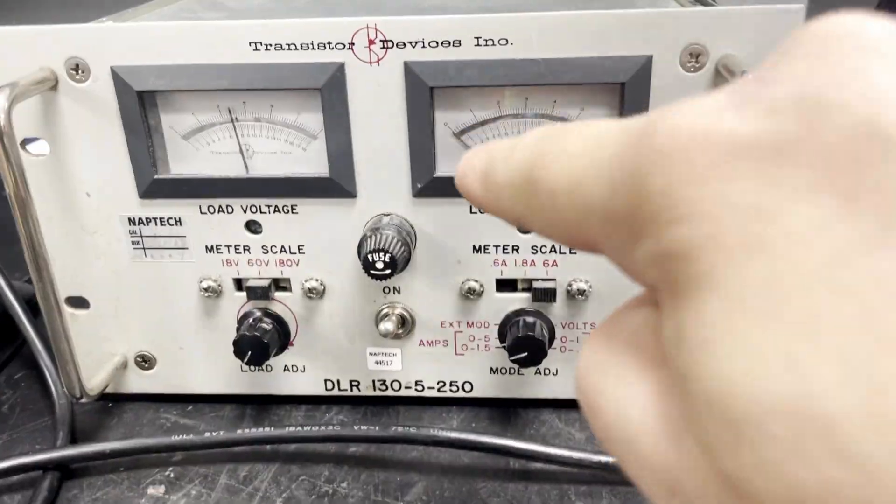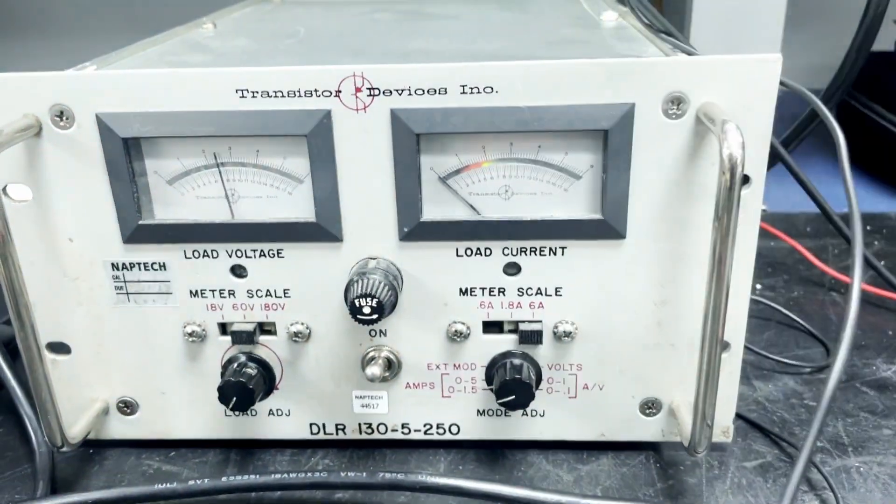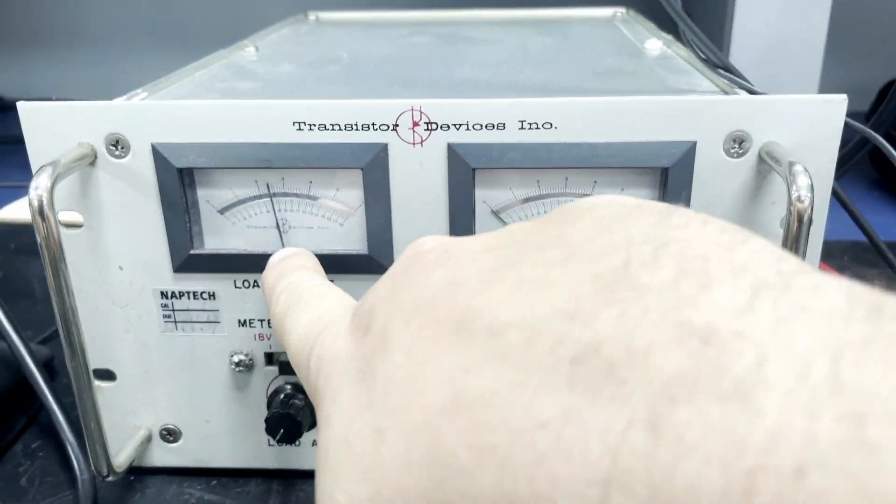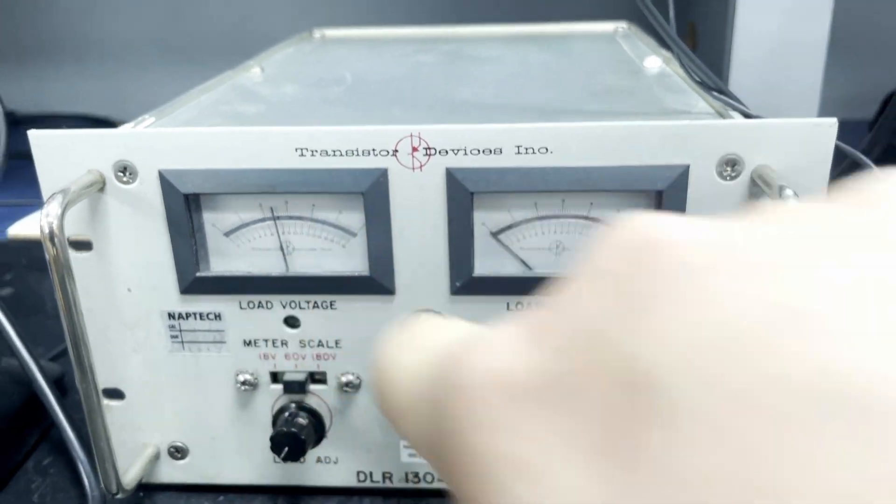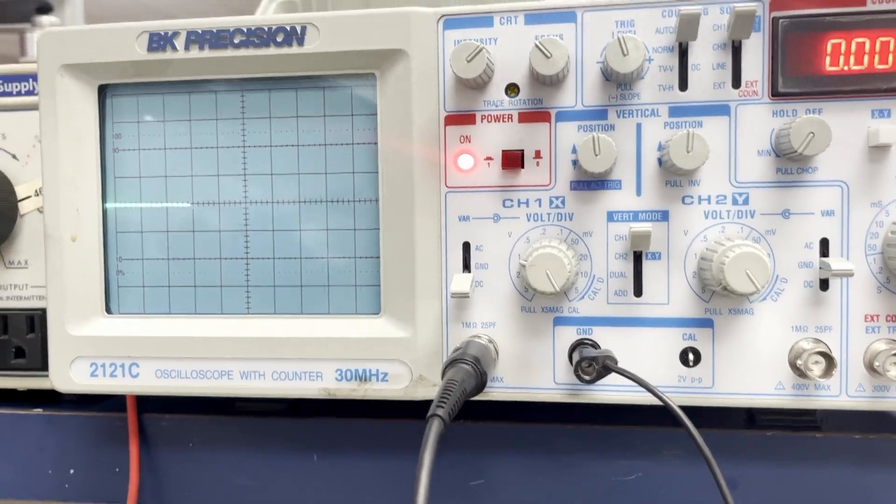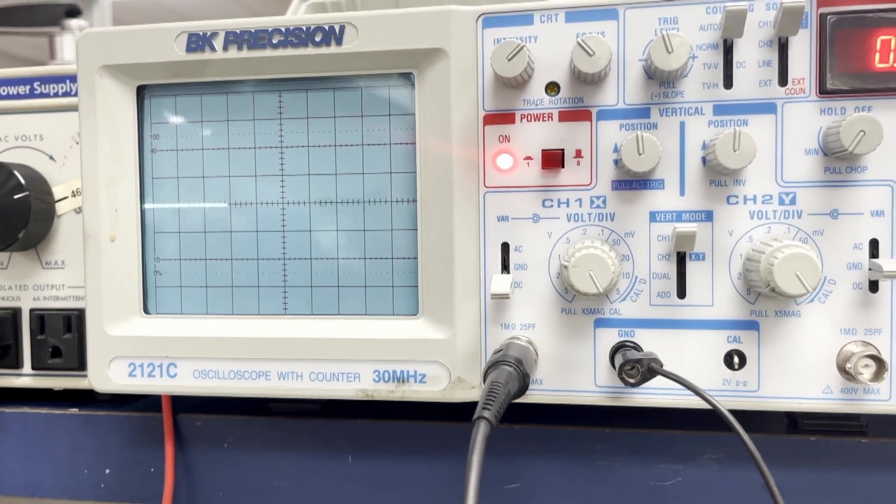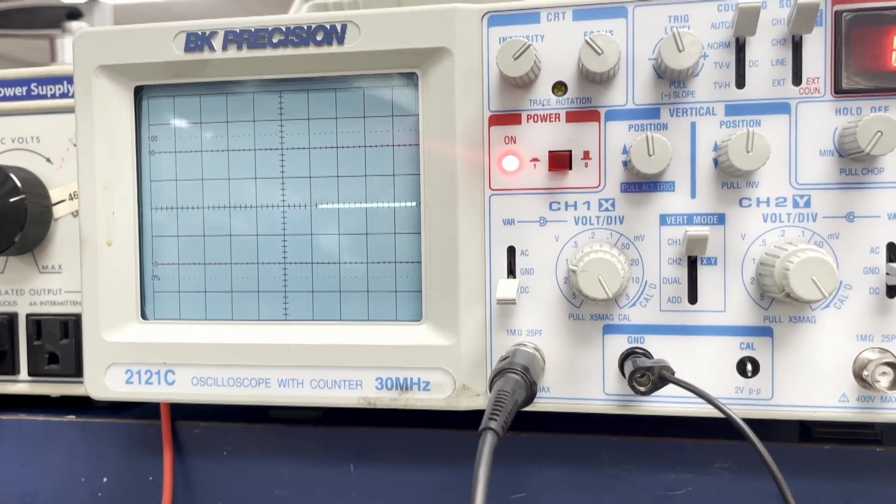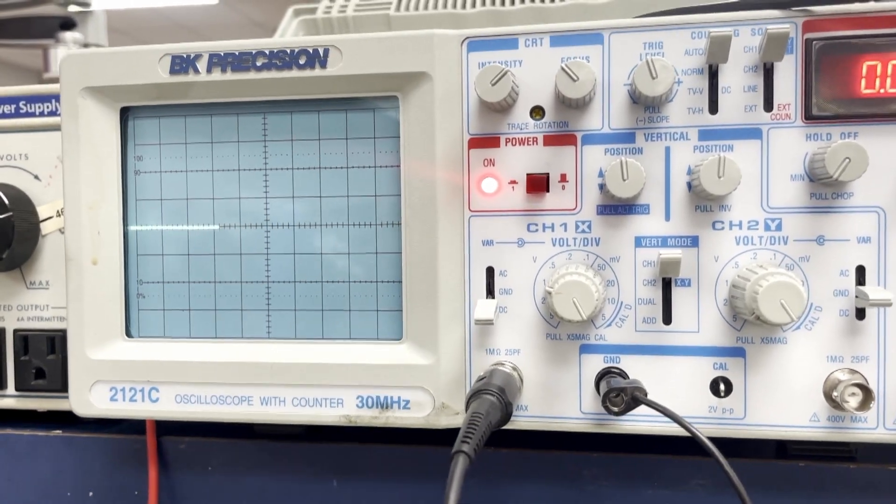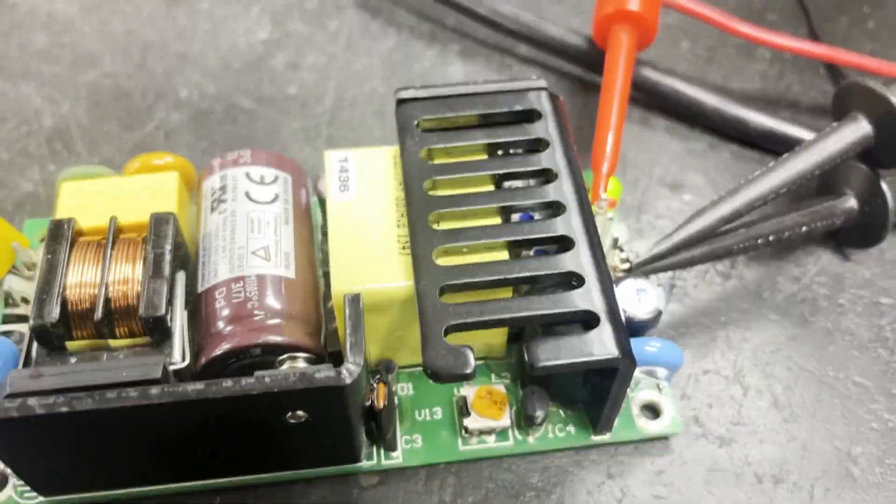As we increase the load, we want to monitor the load voltage to make sure we don't have any sort of a dip, as well as check the oscilloscope to make sure that our signal is clean and there is no AC waveform present on the DC output. So first, we will go ahead and raise the load up to the 2.4 mark on the scale.